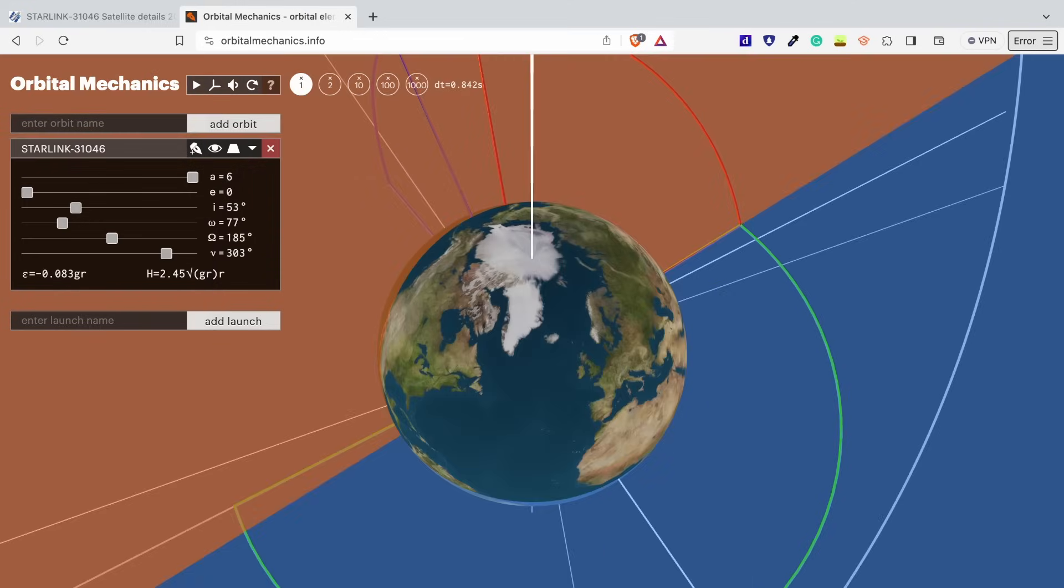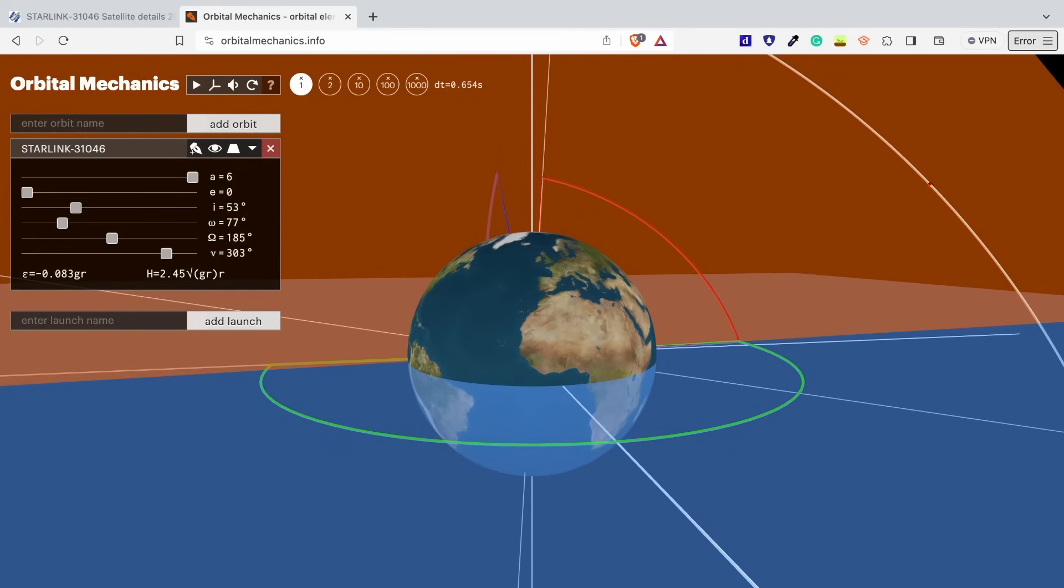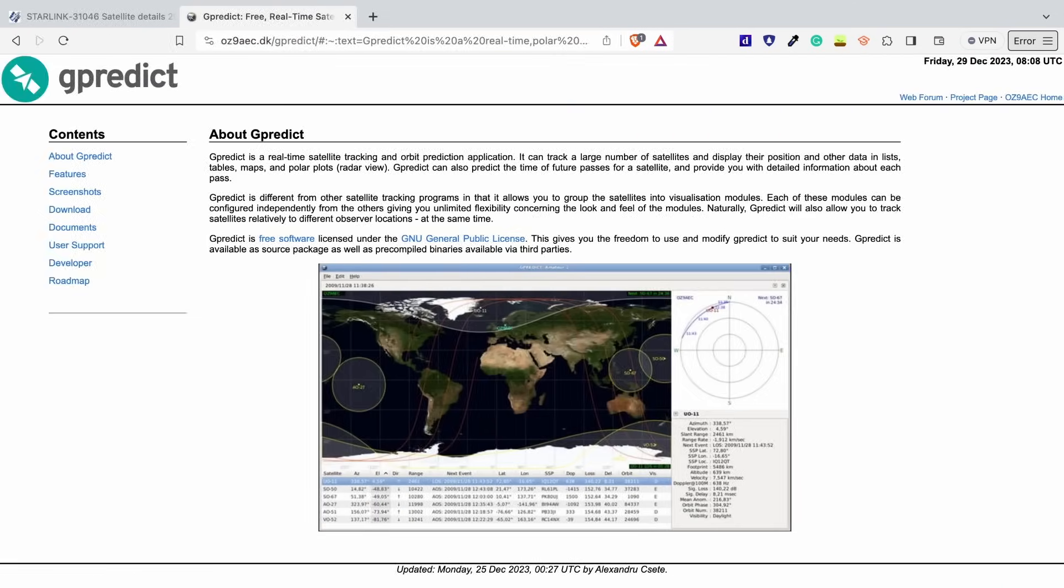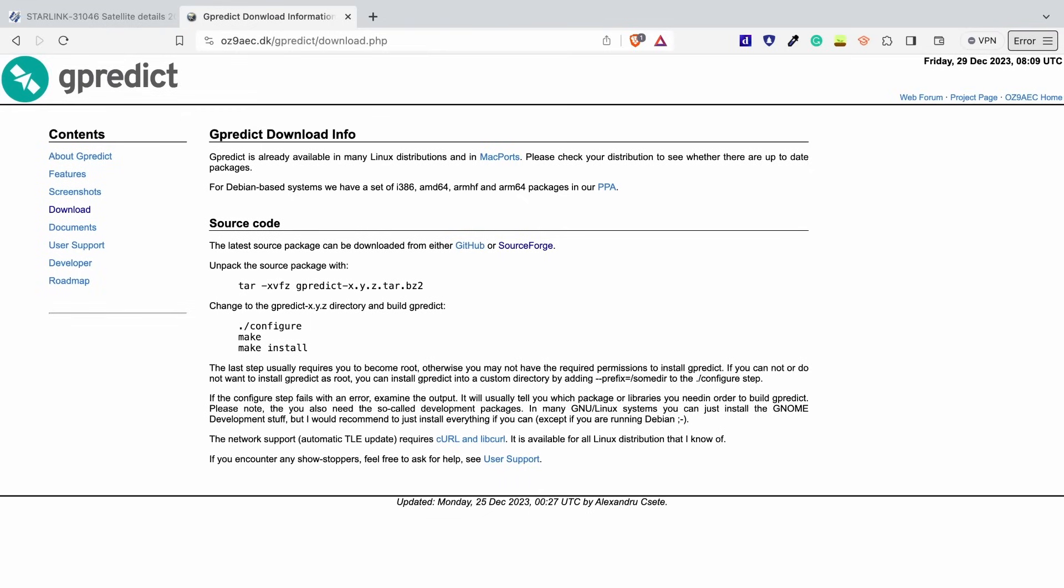Another application that allows you to track down all these details about a satellite is gPredict. gPredict is a free application for real-time satellite tracking and orbit prediction. You can download it from this website here by going to the downloads page and getting the source code from GitHub.